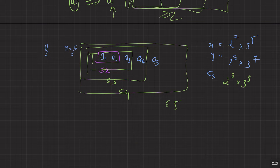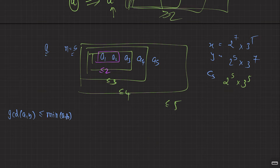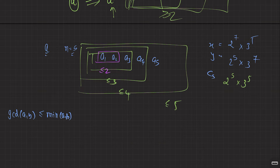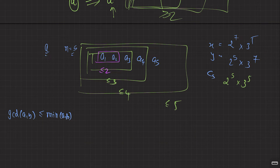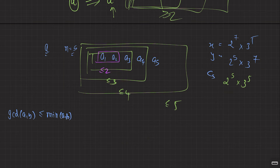Here's the crucial observation: GCD(a, b, c) ≤ GCD(a, b). Adding a new element to a set cannot increase the GCD — it can only keep it the same or decrease it. For example, GCD(4, 16) = 4. If you add 8, GCD stays 4. If you add 2, GCD drops to 2. It can never go above 4.